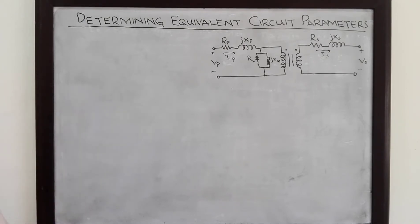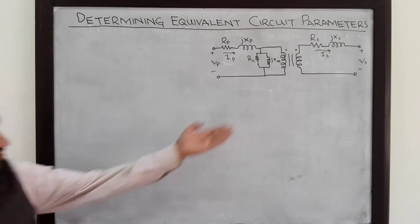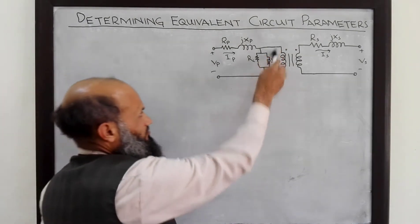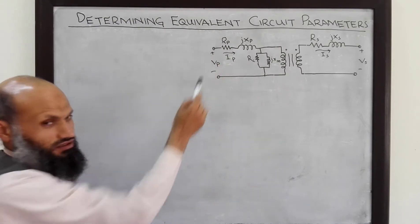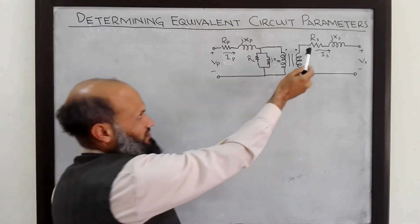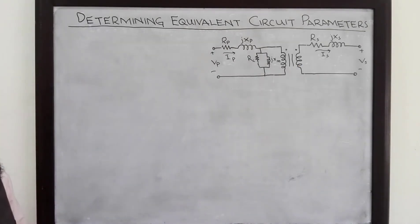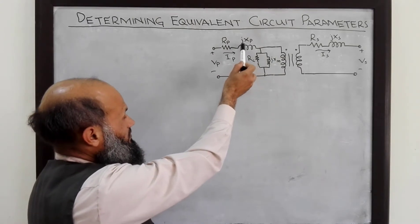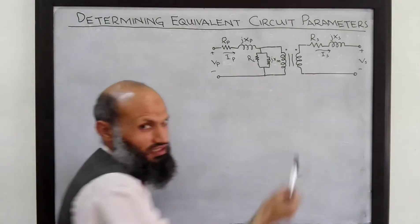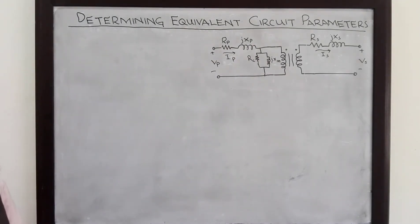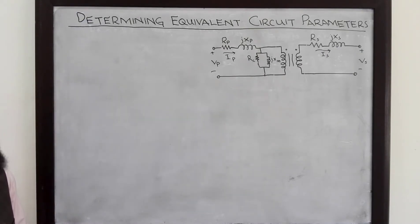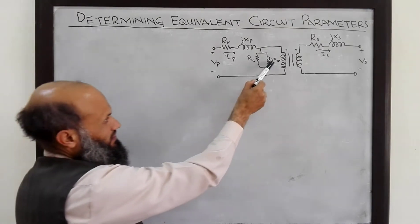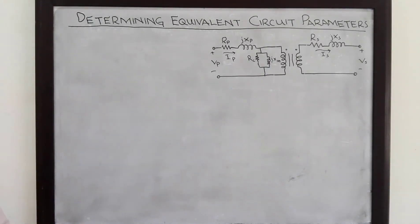The equivalent electrical circuit of a transformer was discussed in the last lecture. Here this symbol is for an ideal transformer, this resistance is the resistance of copper windings on the primary side, and this resistance is for the secondary side. These inductive reactances incorporate the leakage flux on the primary and secondary sides. RC incorporates the effect of core losses and XM incorporates the effect of magnetization current.